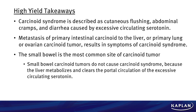Our high-yield take-home points: Carcinoid syndrome is described as cutaneous flushing, abdominal cramps, and diarrhea caused by excessive circulating serotonin. Metastasis of a primary intestinal carcinoid tumor to the liver, or a primary lung or ovarian carcinoid tumor, can result in these symptoms. The small bowel is the most common site of the carcinoid tumor, and small bowel tumors do not typically cause carcinoid syndrome because the liver metabolizes and clears the portal circulation of the excessive serotonin before it reaches the rest of the body.